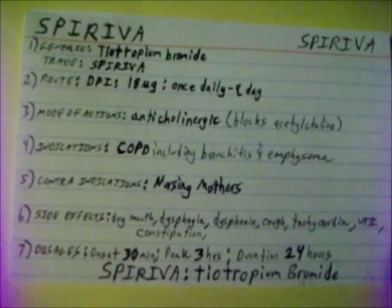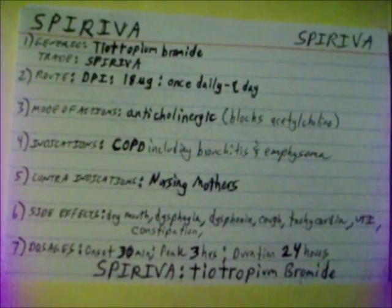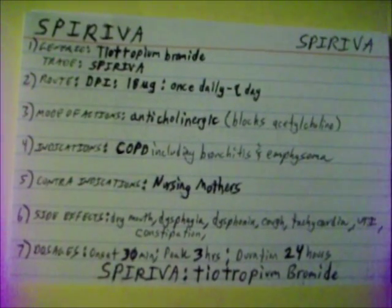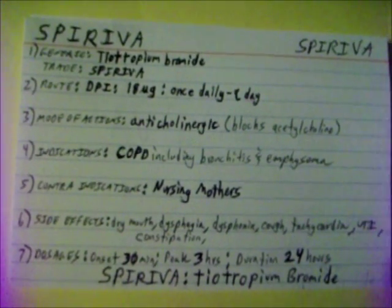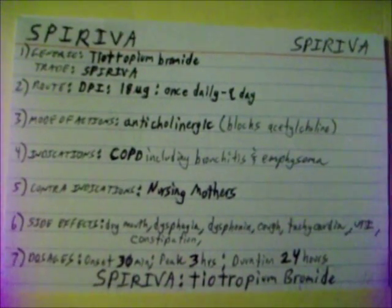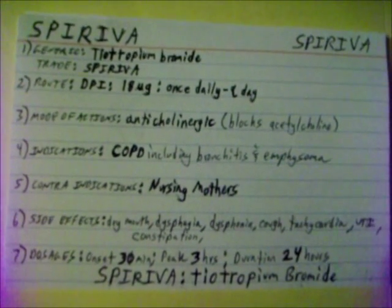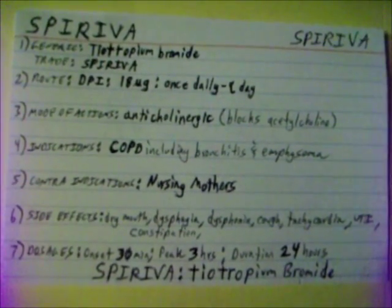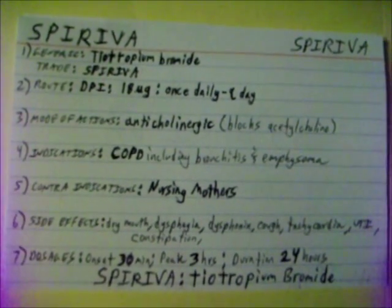Contraindications for Spiriva: do not give to nursing mothers. Side effects are dry mouth, dysphagia, dysphonia, cough, tachycardia, urinary tract infections, and constipation. Spiriva's onset is 30 minutes, peak is 3 hours, and duration is 24 hours — given once daily.